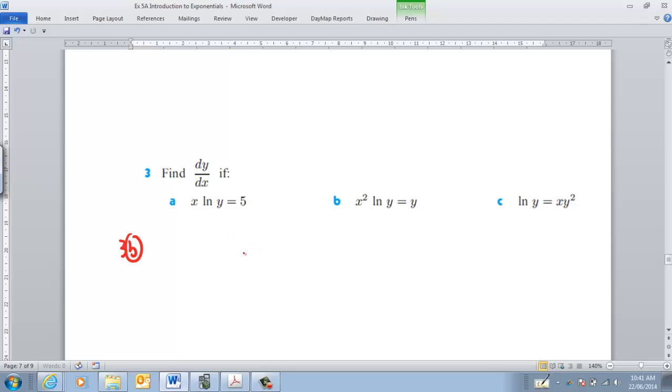So I've got this function here, which is x squared ln y equals y. Now, and I have to find dy dx. So I think we've got two functions here. So I've got my x squared function, I've got my ln of y function. So let's do it.